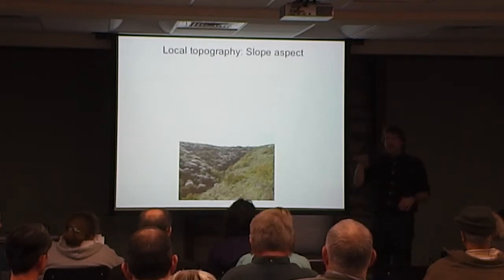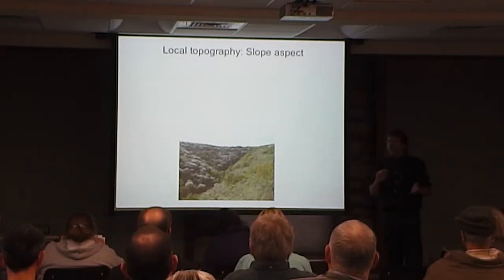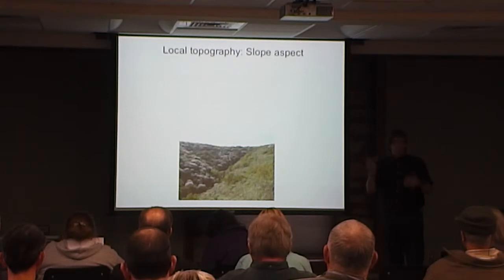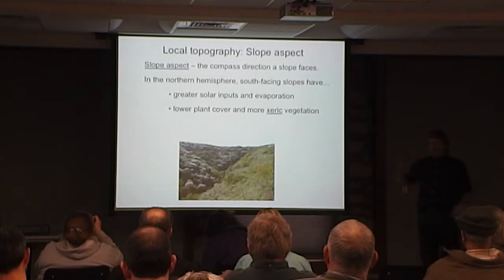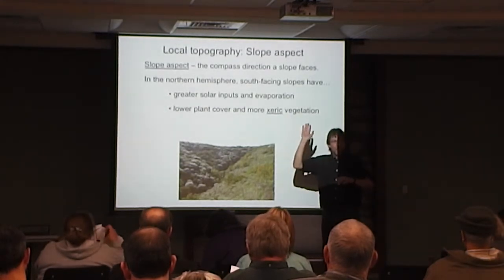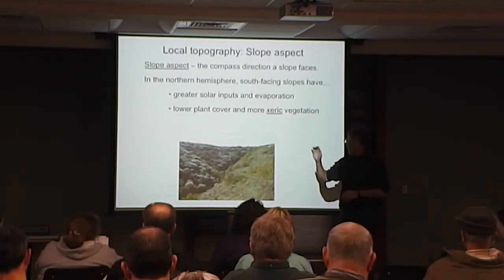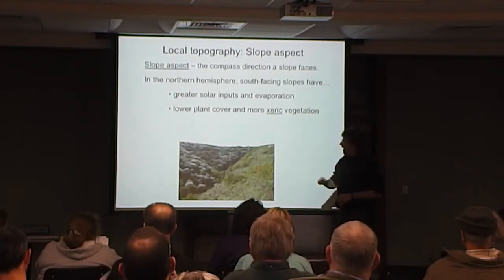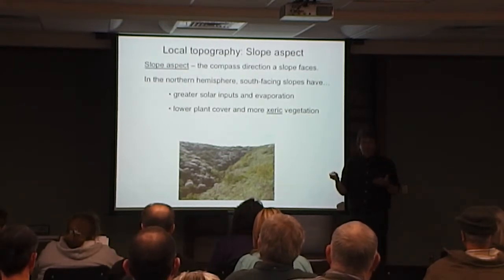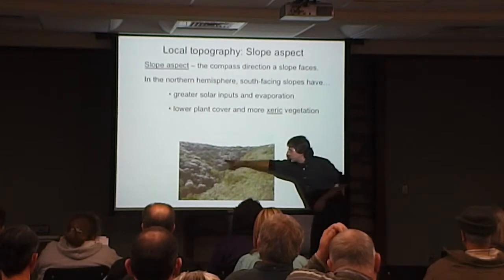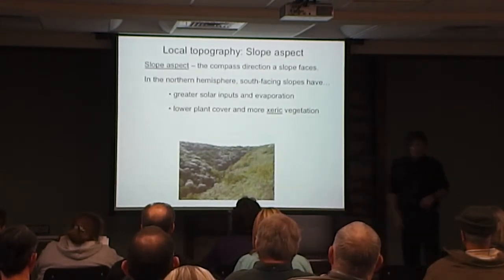The other thing that mountains do — and this isn't as relevant to us here — is that aspect matters. Aspect is compass direction: does it face north, south, east, or west? The basic idea is that in the northern hemisphere, because the sun is always towards the equator, a south-facing slope gets more direct solar input than a north-facing slope. And so that can actually result in strong differences in vegetation in mountain ranges, depending on whether you have a north or south-facing slope. It's easy to see this when you fly over the Rockies or other ranges.